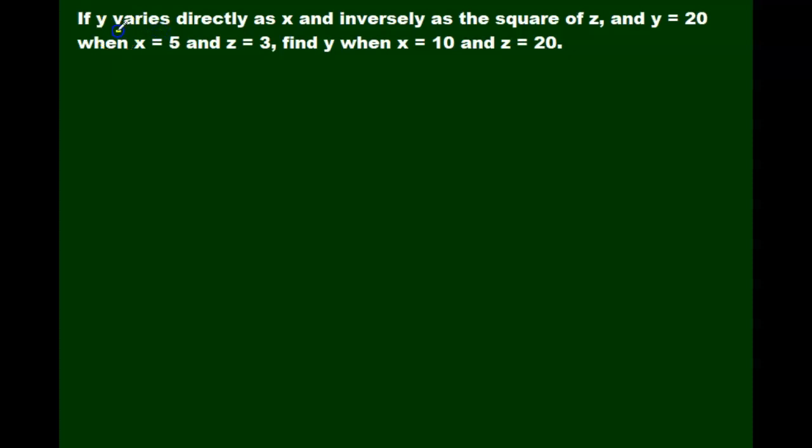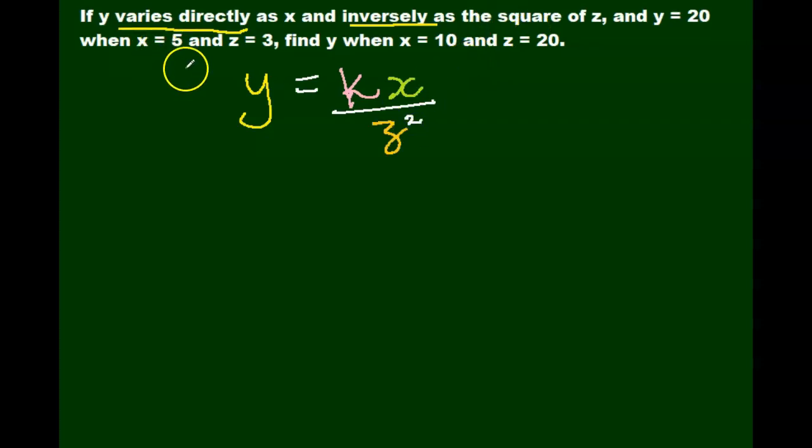If y varies directly as x and inversely as the square of z, and y equals 20 when x equals 5 and z equals 3, find y when x equals 10 and z equals 20. The first thing we want to do is write our given information in equation form. So we have y varies directly, so y equals k, that's our constant of proportionality, and it varies directly with x, so we can say it's kx, and inversely, so it's over the square of z.